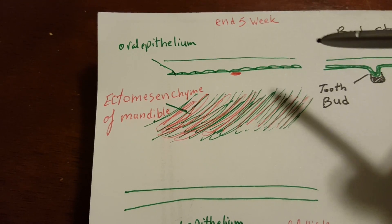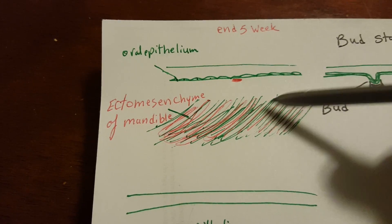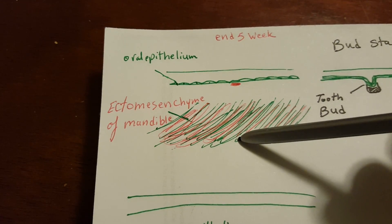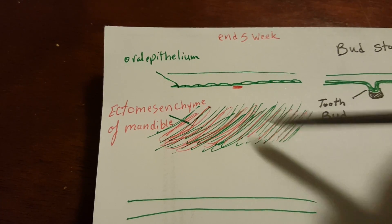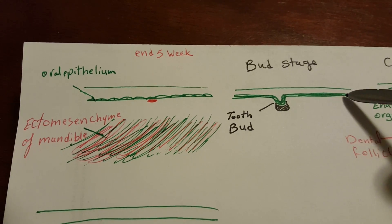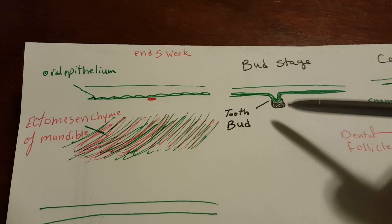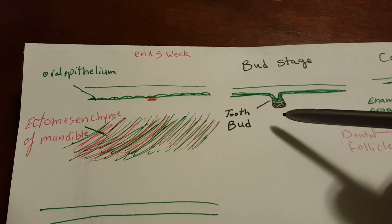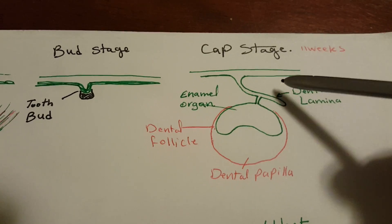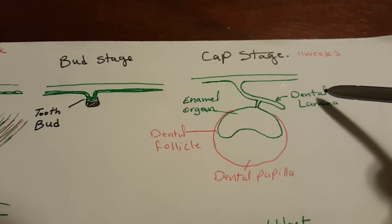By the end of the fifth week, you can see the oral epithelium and underneath it is the ectomesenchyme of the mandible. The first step is the formation or invagination of the oral epithelium to form what's called a tooth bud. This is called the bud stage. The next step is the oral epithelium also extends to form the dental lamina.